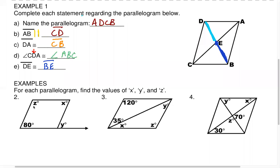In example two, we have a picture of a parallelogram — you are told as much right here. Find all the missing variables. We need to find the measures of Z, X, and Y. Look at your notes and use any property you can. Opposite angles are congruent: if this is 80 degrees here, X has to be 80 degrees because they're opposite angles.